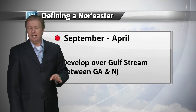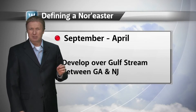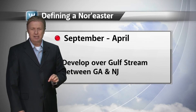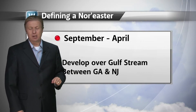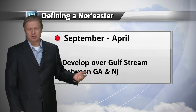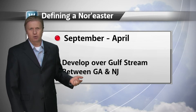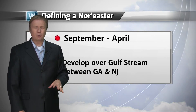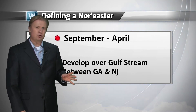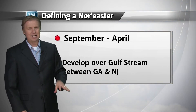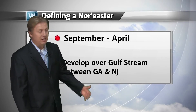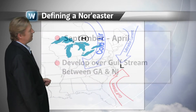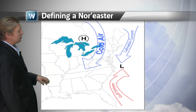In an average year, there can be as many as 20 to 40 nor'easters. That's an extremely high number, but of those, only about 2 to 3 actually become significantly severe — so that number, thankfully, is quite low.